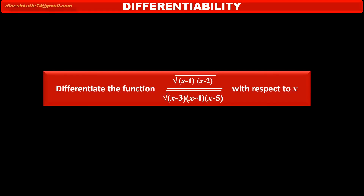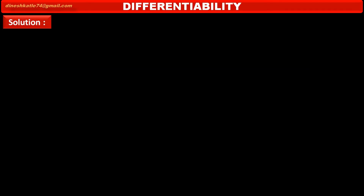We have to differentiate the function: square root of (x minus 1) into (x minus 2), upon square root of (x minus 3) into (x minus 4) into (x minus 5). Let y be equal to the given function: square root of (x minus 1)(x minus 2) upon square root of (x minus 3)(x minus 4)(x minus 5).